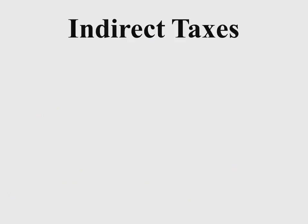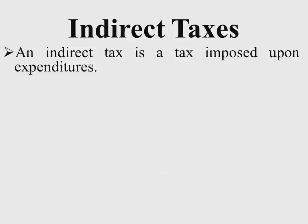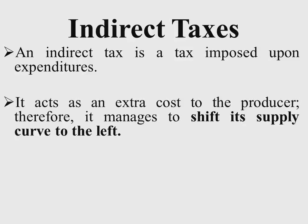An indirect tax is a tax imposed upon expenditures. When you go to buy commodities — fuel, groceries — you pay for the amounts of commodities you are getting and also for the tax. Every expenditure you make has a tax attached to it. When goods are produced and finally sold to the consumer, taxes are involved, so it acts as an extra cost to the producer and therefore shifts the supply curve to the left.